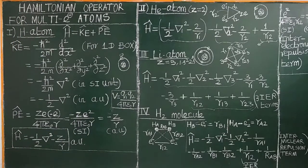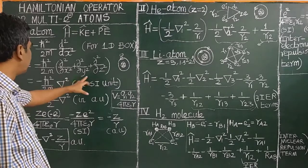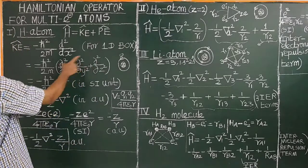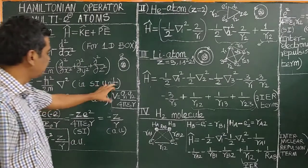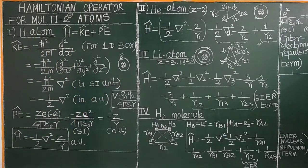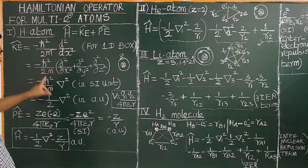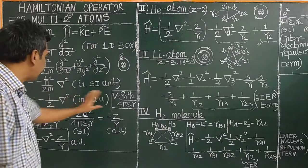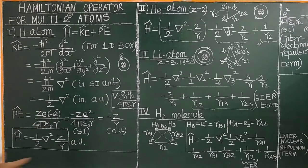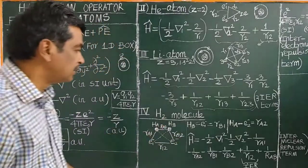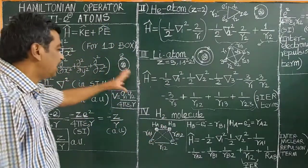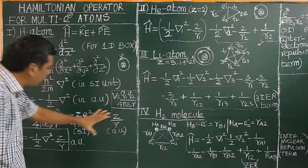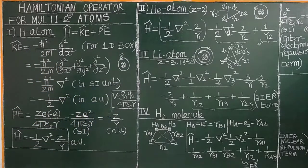How to construct the Hamiltonian operator? From classical expressions, we construct the operators. The expression is simplified in atomic units, where del-squared is the Laplacian operator. This is simplified so that for multi-electron atoms, it can be easily written when expressed in atomic units.